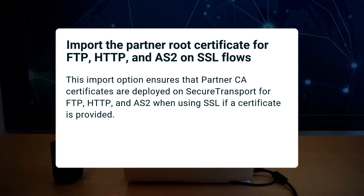With this release, the partner's route certificate is imported for flows that use FTP, HTTP, and AS2 protocols with SSL. After deployment, all certificate authorities in the chain must also be deployed on secure transport. The transfer process should function properly when secure transport requests are available.